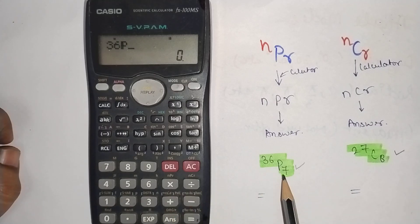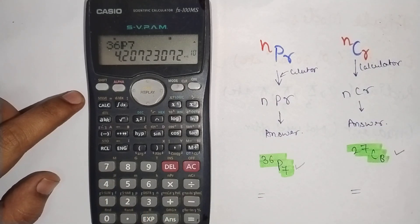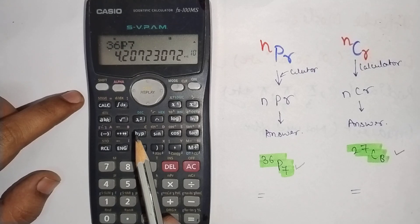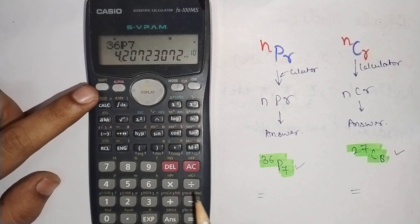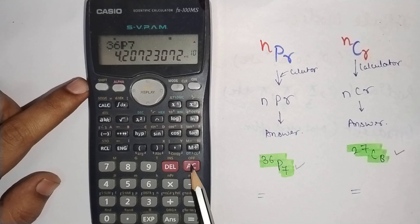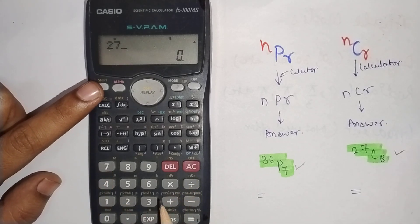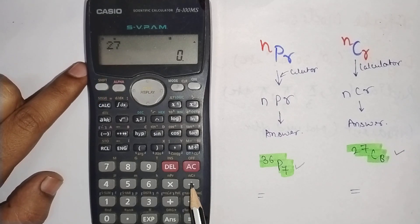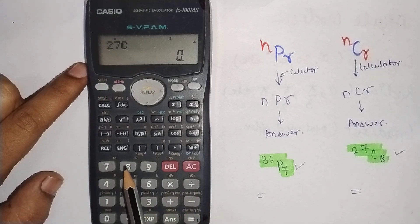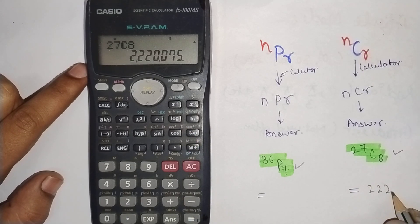Then press R, then 7, press equals — that is our answer for permutations. Now for combination, press AC, press 27, press Shift, then press combination, then 8, press equals. Your answer is 2,220,075.